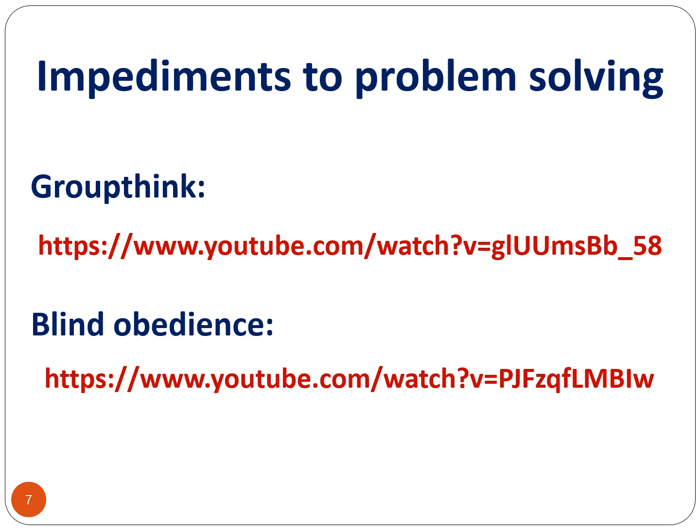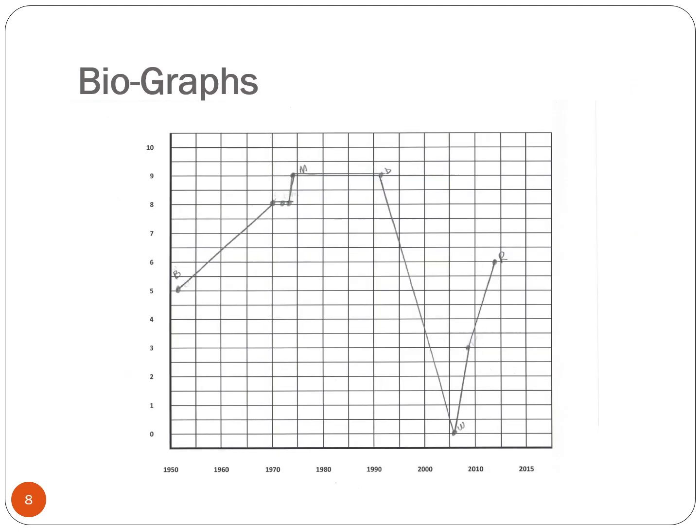The next slide introduces an activity to help you understand one last possible impediment to problem solving — one that has to do with significant events in your life and how they might influence your approach to problem solving. Again, why are humans susceptible to such obstacles? There may be some clues in our personal histories.